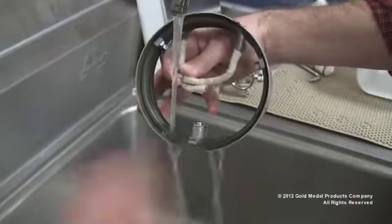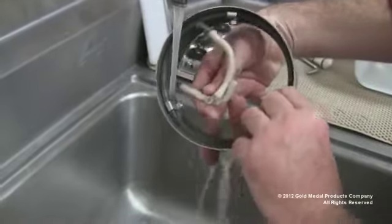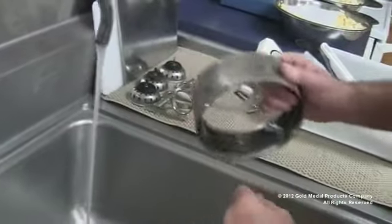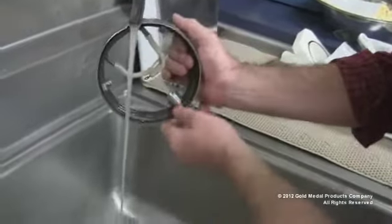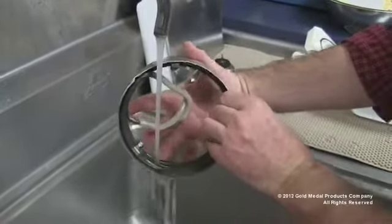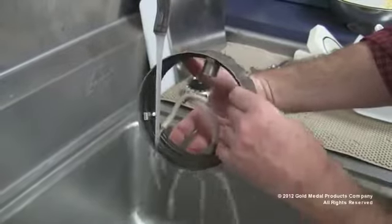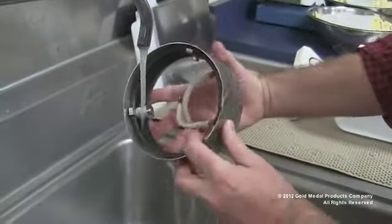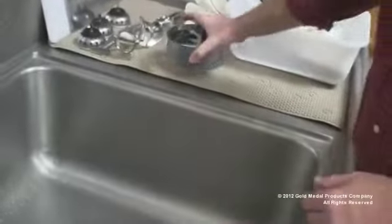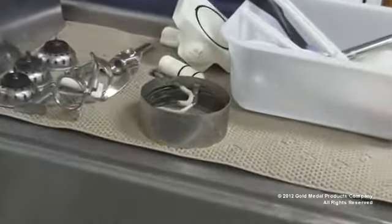This will void the warranty, possibly cause electrical shock and permanent damage to the machine. Direct the stream of warm water into the turns of the heat element. This may need to be repeated several times to dislodge any sugar buildup. Constantly protect the wire leads. Keep the wire leads out of water. Do not let them become soaked. Dry it off immediately if they do become soaked. Shake the band assembly off and let sit overnight to air dry.